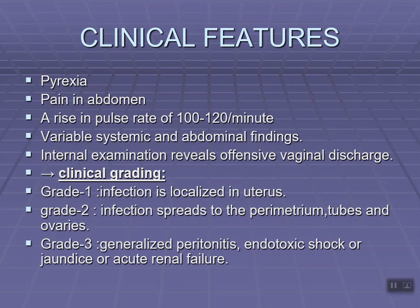The grading of septic abortion has three grades according to the spread of infection. Grade 1: infection is only localized in the uterus. Grade 2: it spreads to the perimetrium, fallopian tubes, and ovaries. Grade 3: generalized peritonitis, endotoxic shock, jaundice, or acute renal failure. Remember: Grade 1 — uterus only; Grade 2 — perimetrium, tubes, and ovaries; Grade 3 — generalized peritonitis, endotoxic shock, jaundice, and renal failure.